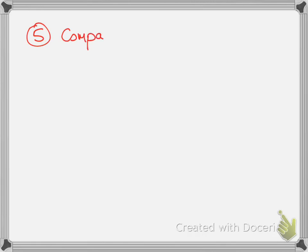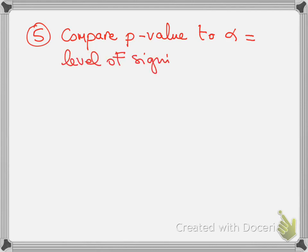Step five: compare the p-value to the level of significance alpha. Step six: give your interpretation of the answer.